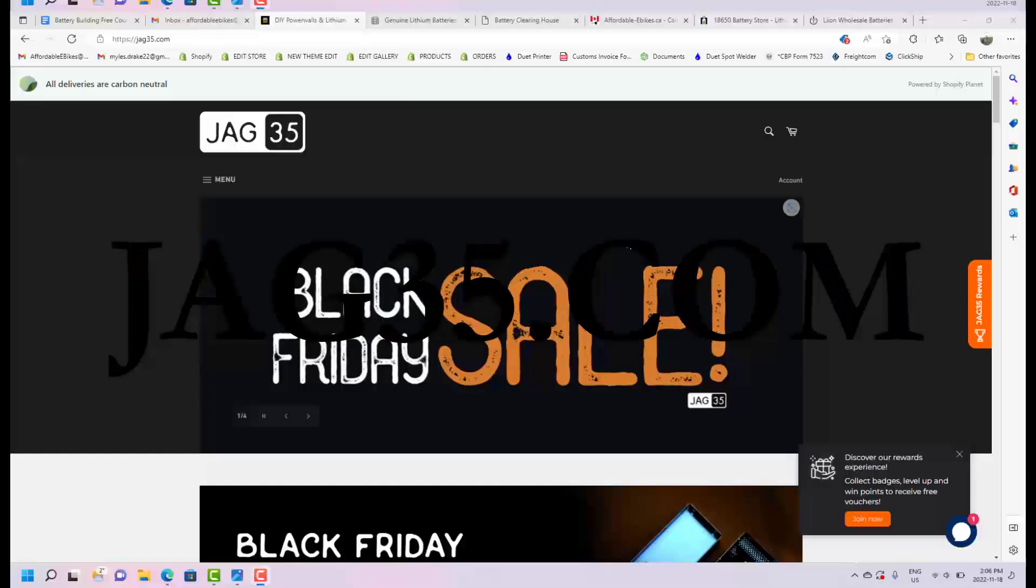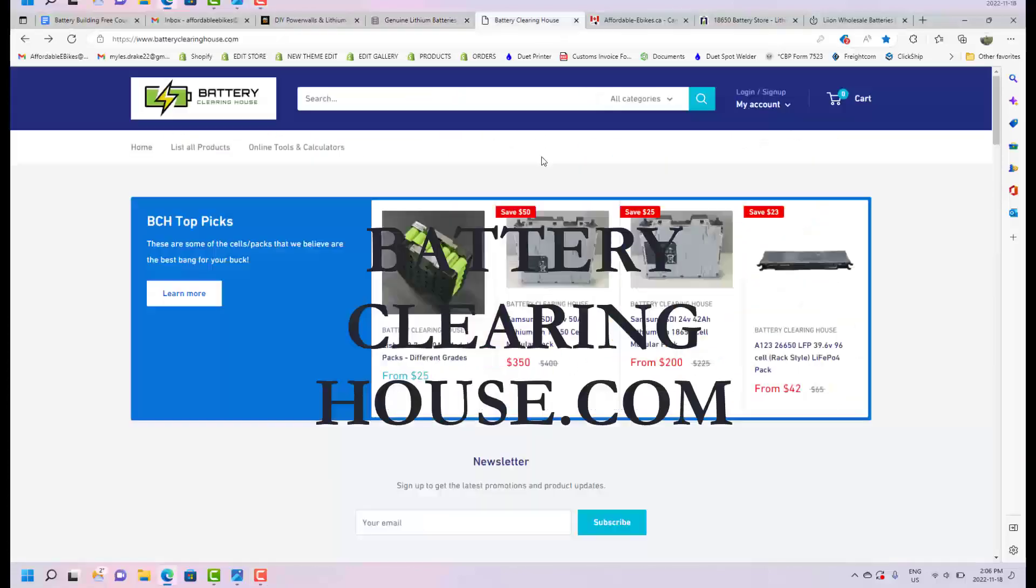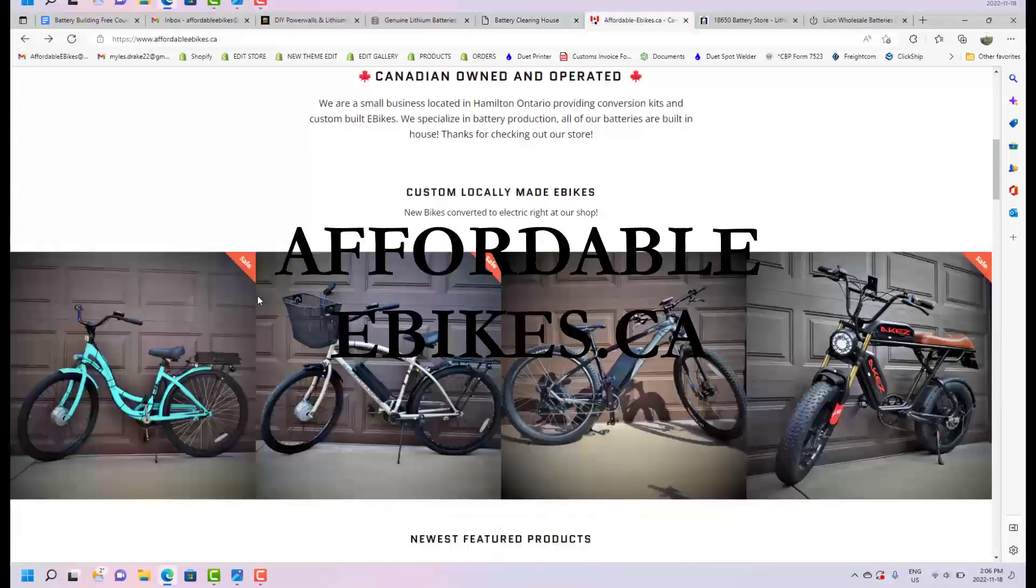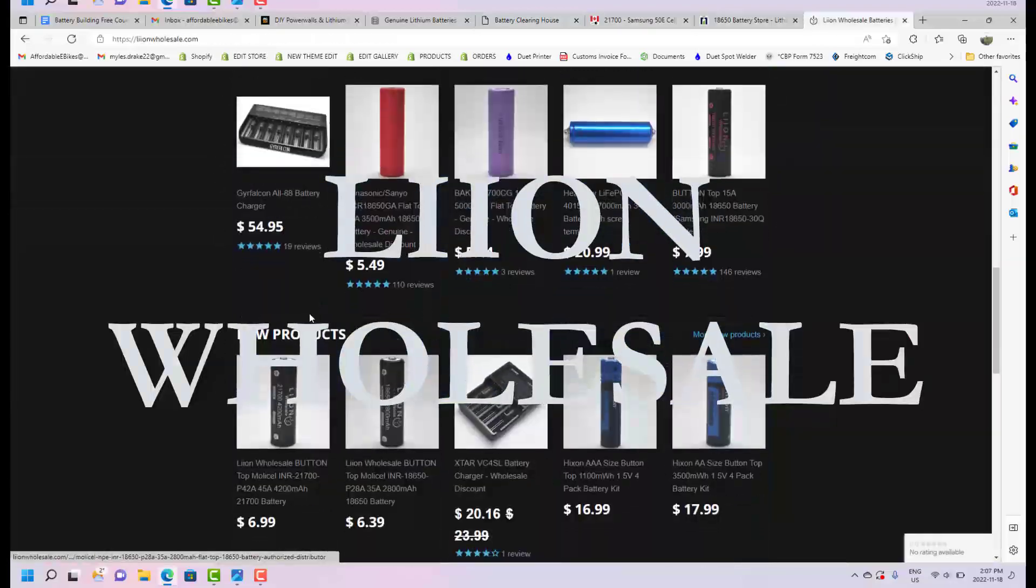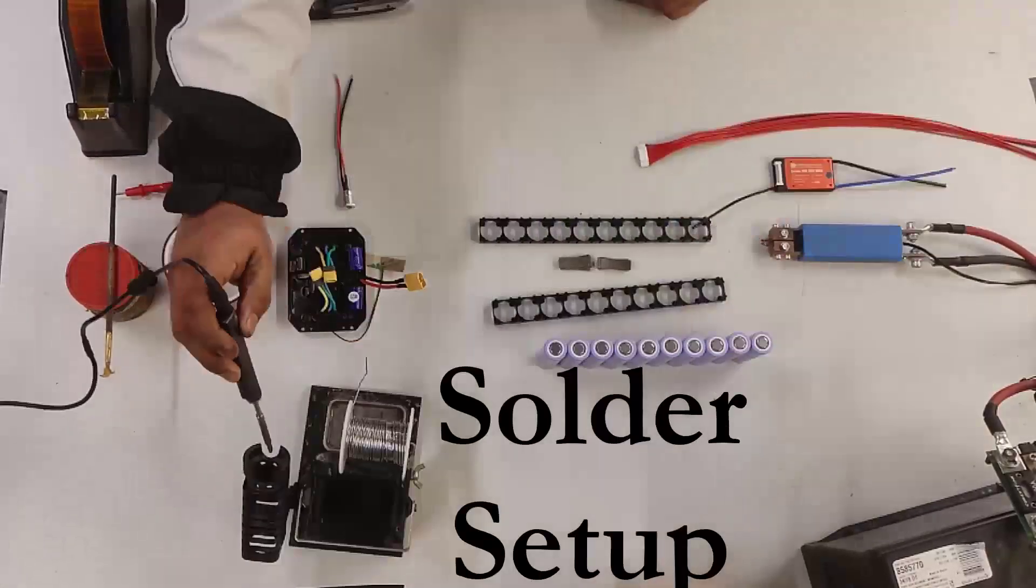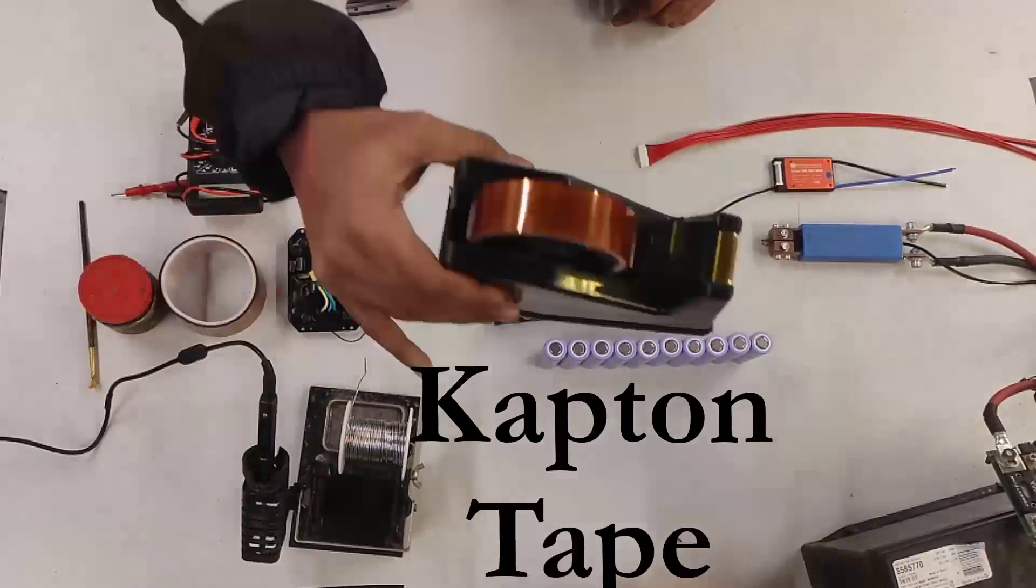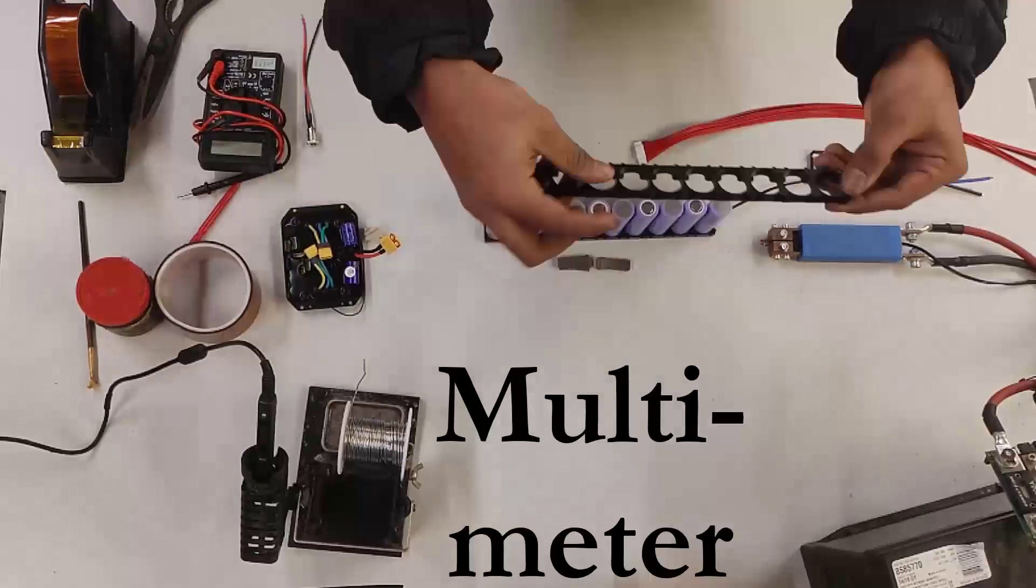So where do you get the cells? A couple of sources: Jake 35, battery hookup, battery clearinghouse. We have some at affordable e-bikes, 18650 battery store, lithium-ion wholesale are all my go-to places. You are also going to need some cell holders, nickel strip, BMS, soldering flux, Kapton tape, multimeter. These are all going to be necessary tools. So let's get this pack together.